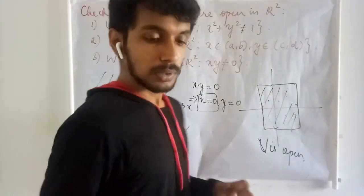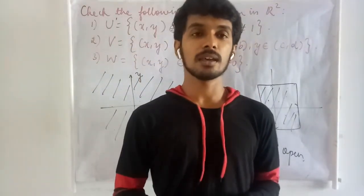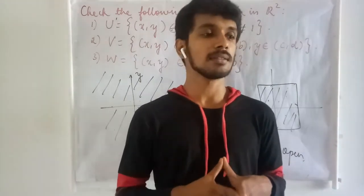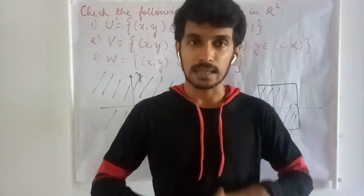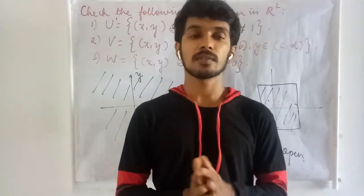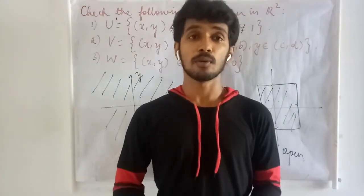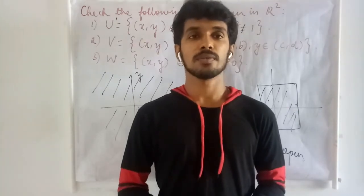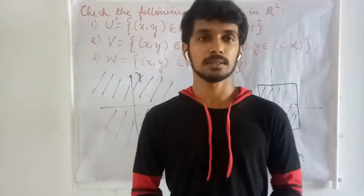With this we end this lecture. In the upcoming lecture we will see examples of closed sets and more examples in R² under the standard Euclidean metric, checking whether sets are open or closed, and also looking at boundedness and perfectness. Thank you for watching. If you have any queries, you can post them in the comment box.